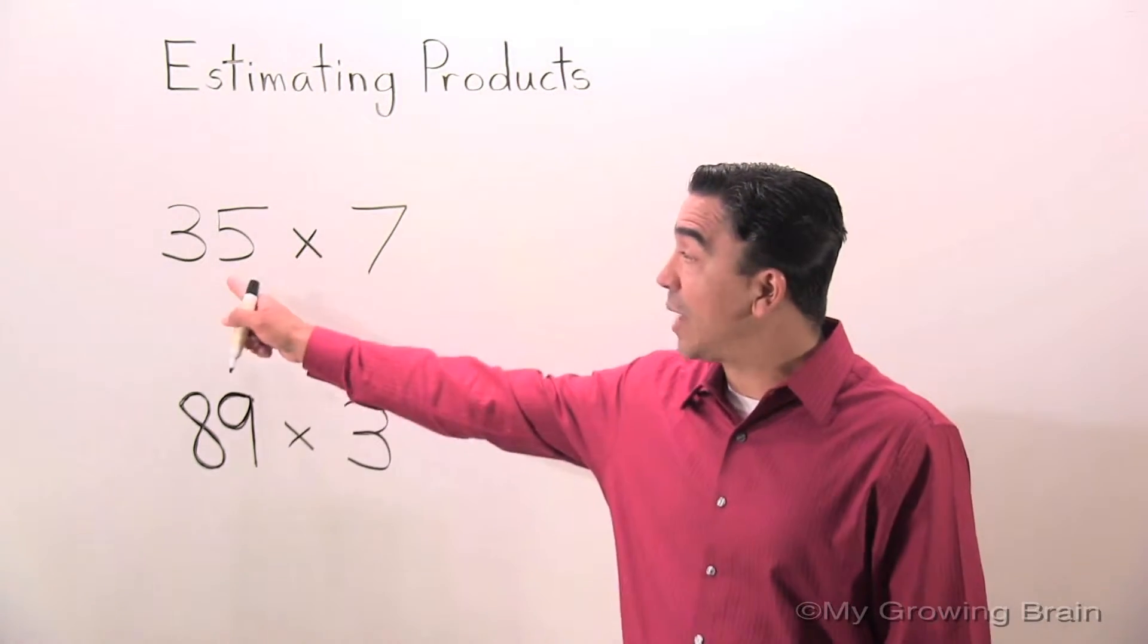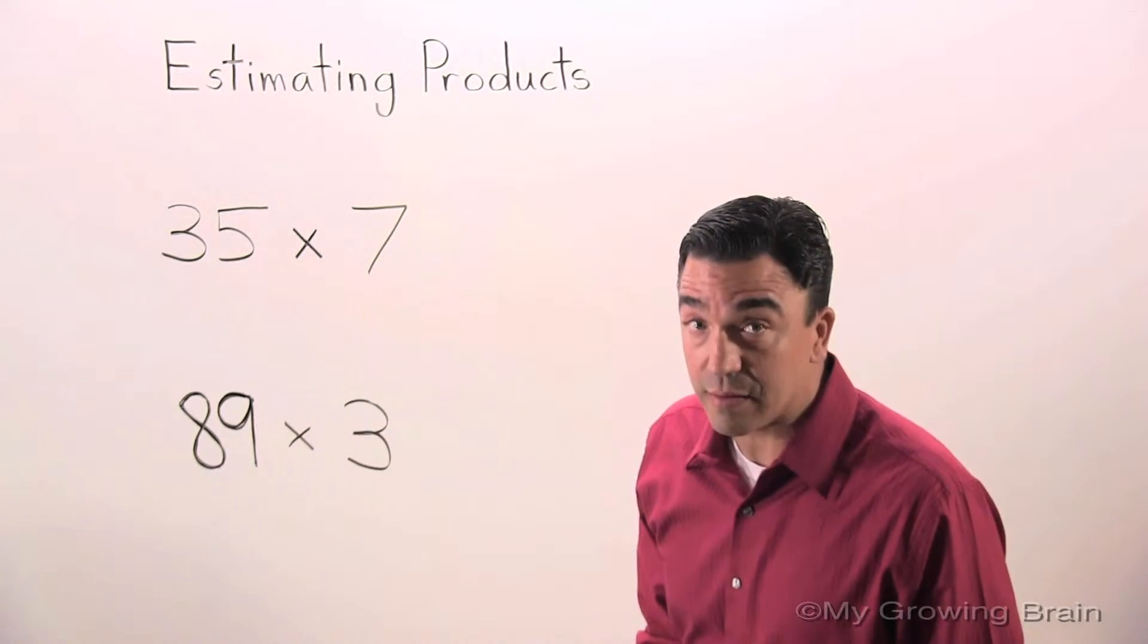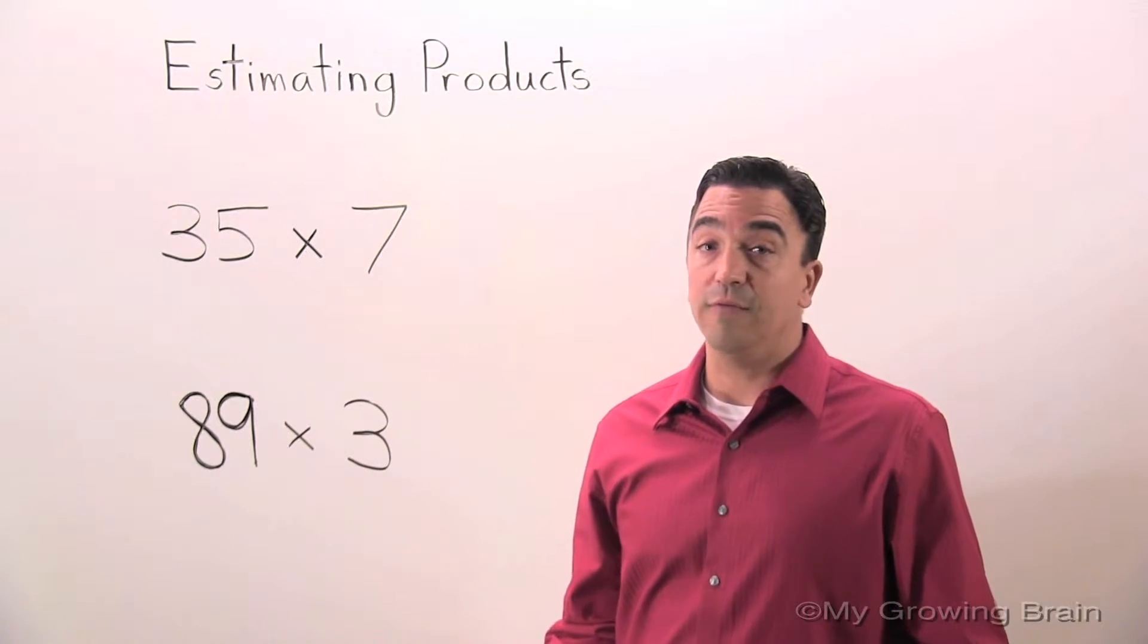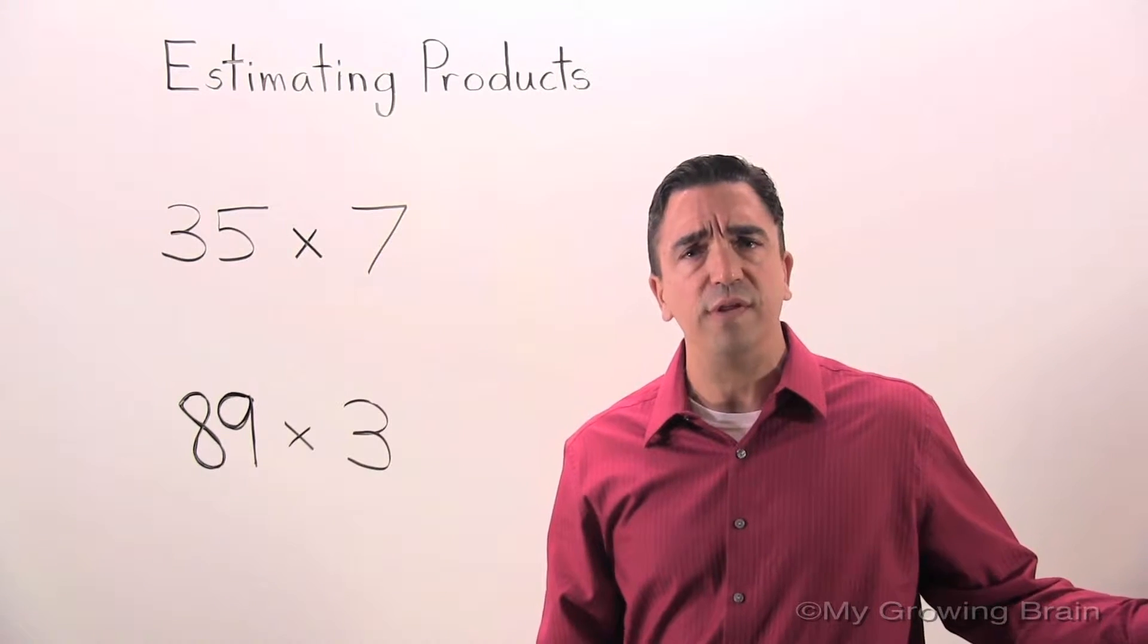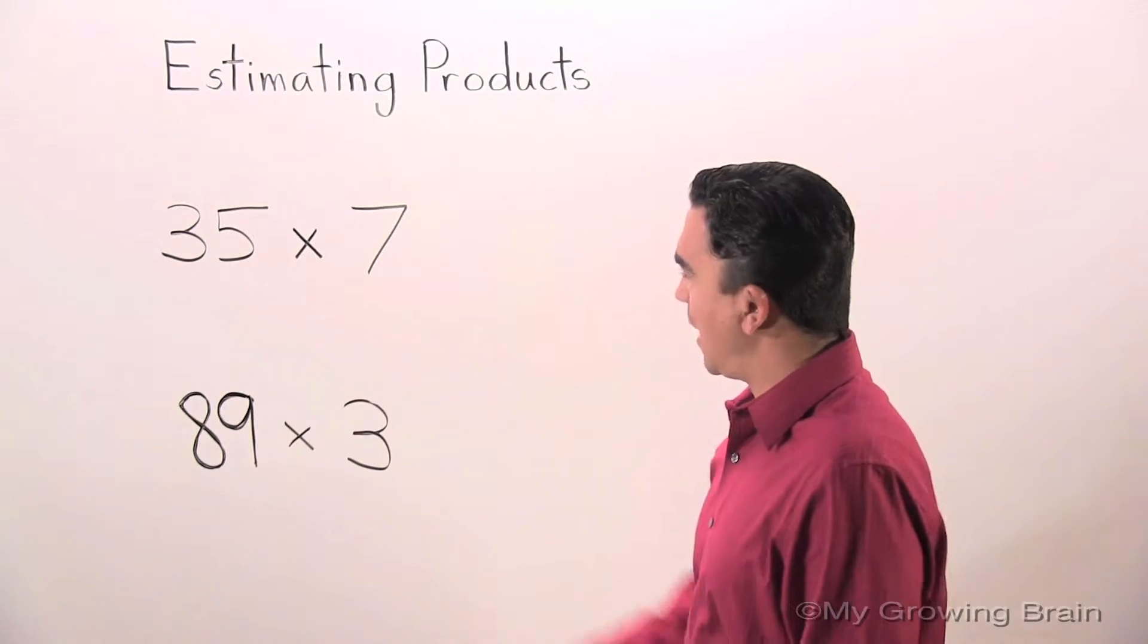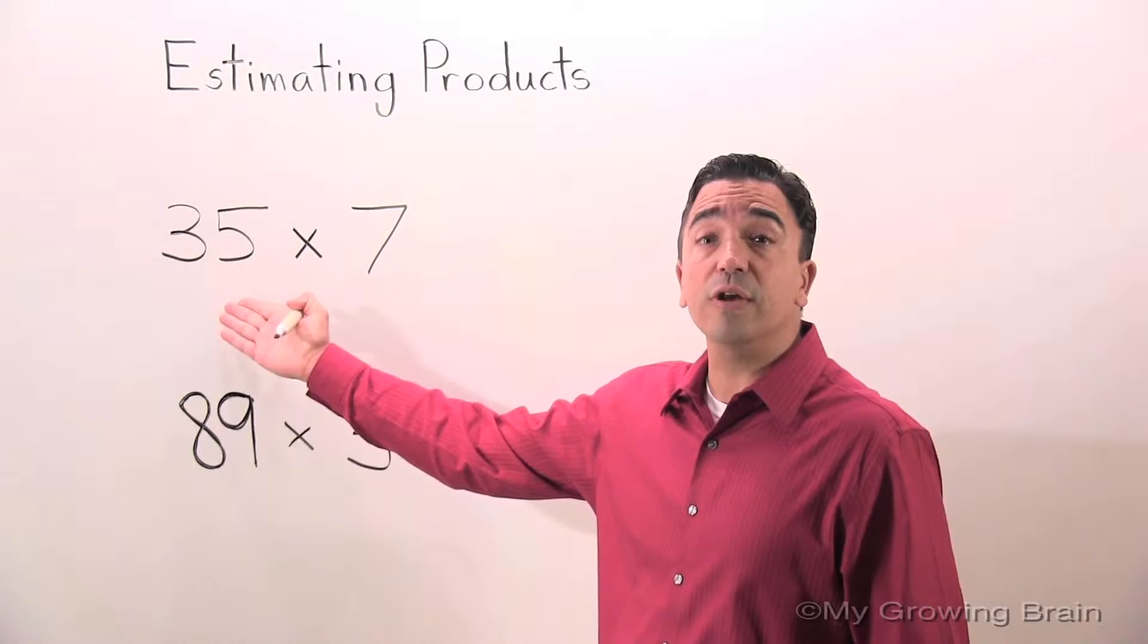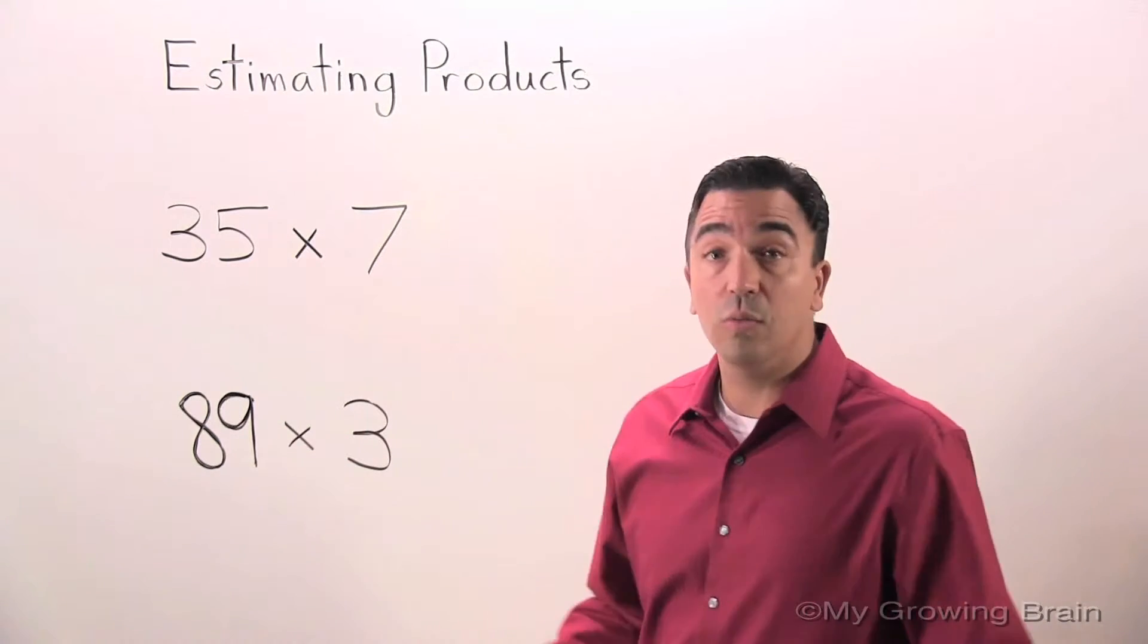The first thing I'm going to do is round this 35 to the nearest 10. If you're having difficulty with rounding, go back to one of our previous lessons. Rounding 35 to the nearest 10 gives us 40.